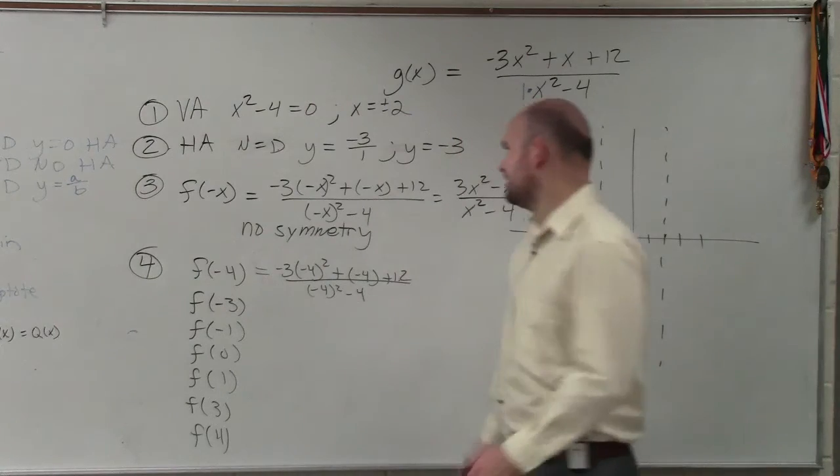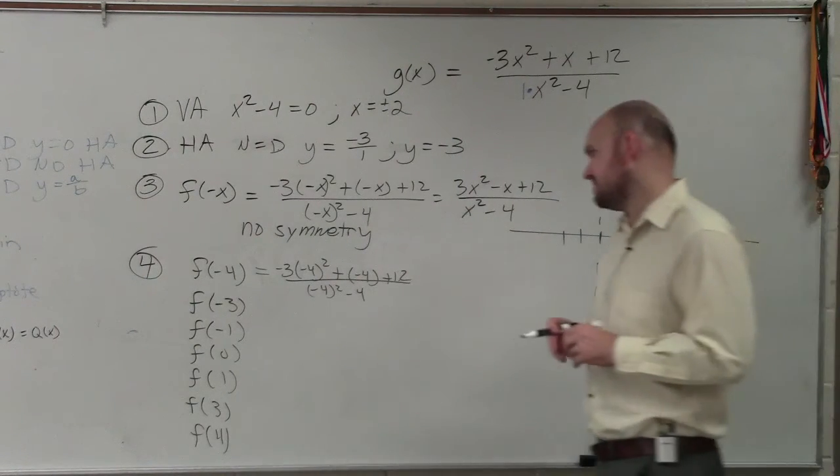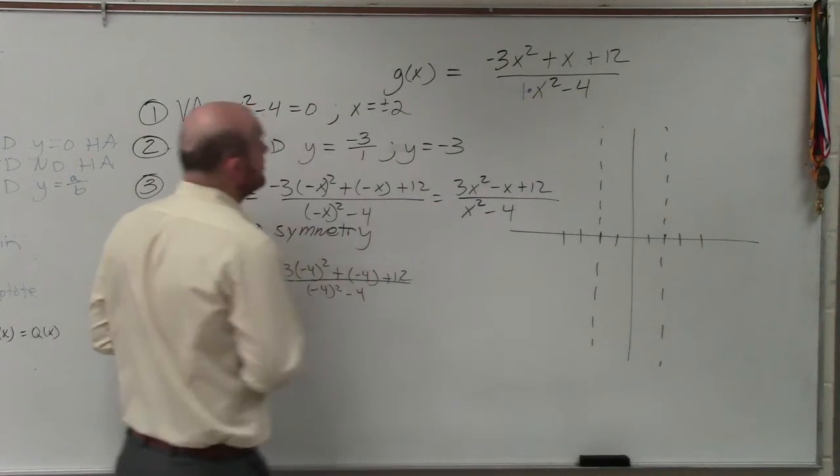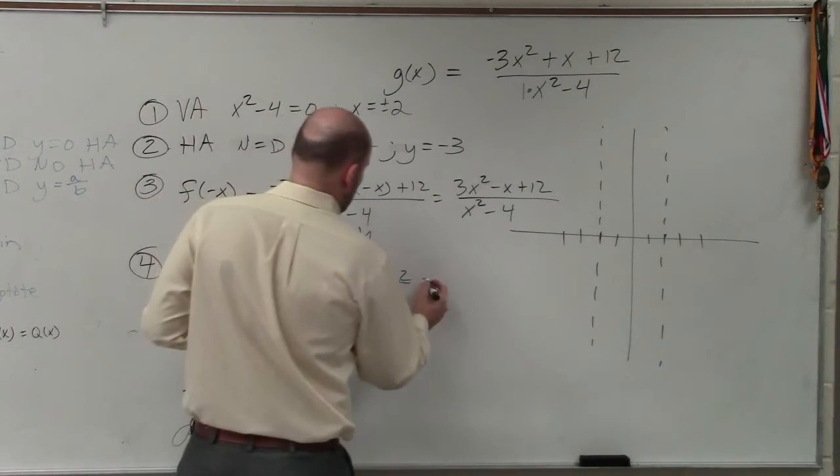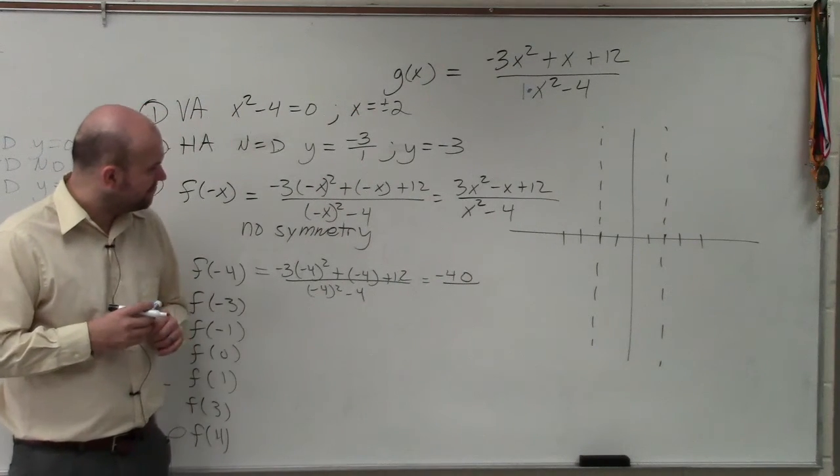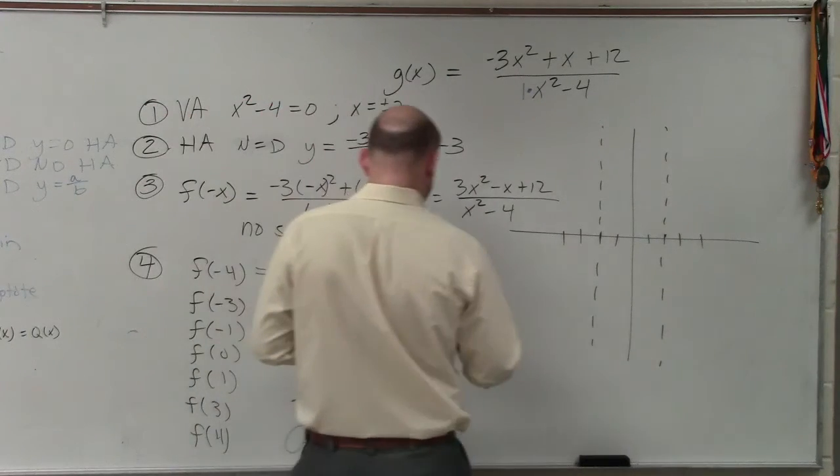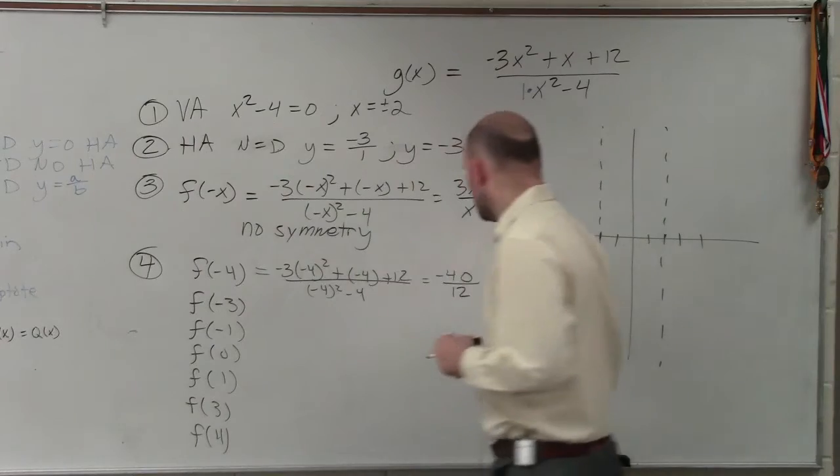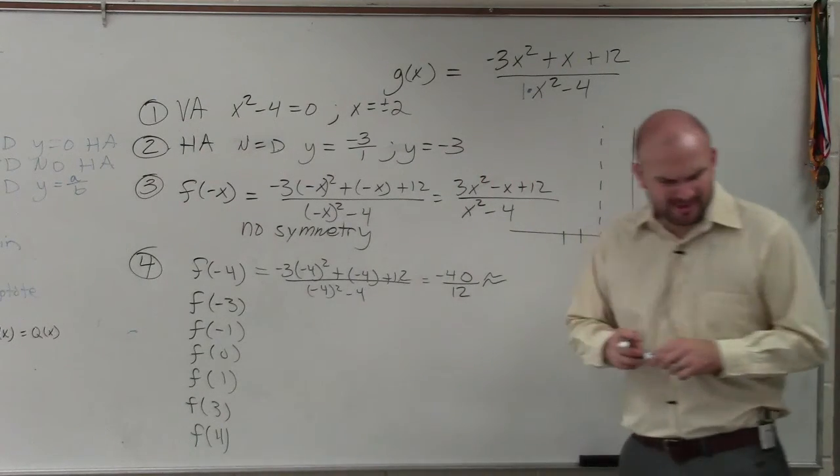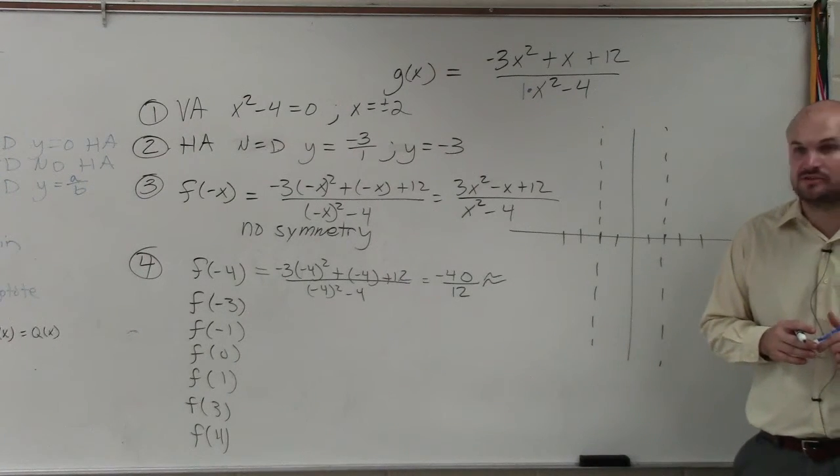So that becomes 16. That becomes negative 48. That's going to be negative 48, negative 52, negative 40 divided by 16 minus 4 is going to be 12. So therefore, that approximates to, just give me the decimal. Anybody have the decimal form of that? Assuming my math is correct.